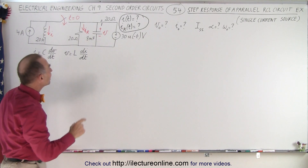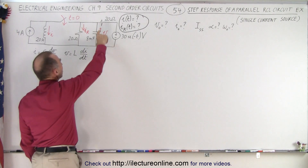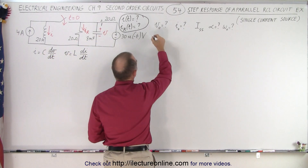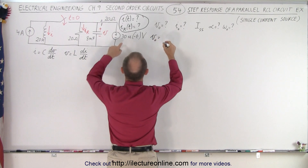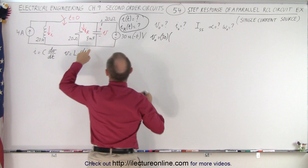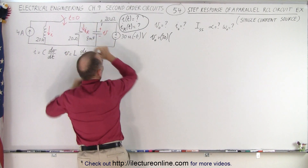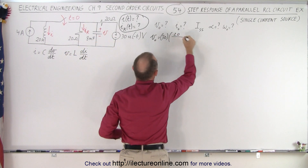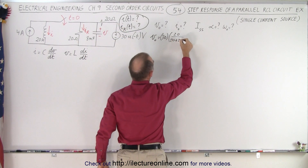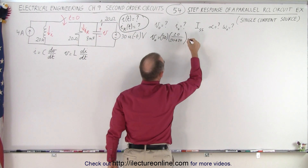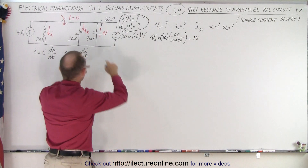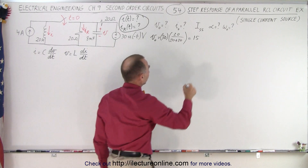Let's first find the initial voltage — that would be the initial voltage across the capacitor, so we need the voltage divider. V initial is going to be equal to the 30 volts multiplied by this resistor divided by the total resistance, which is 20 plus 20 — essentially half times 30, or 15 volts. So 15 volts is the initial voltage across the capacitor.